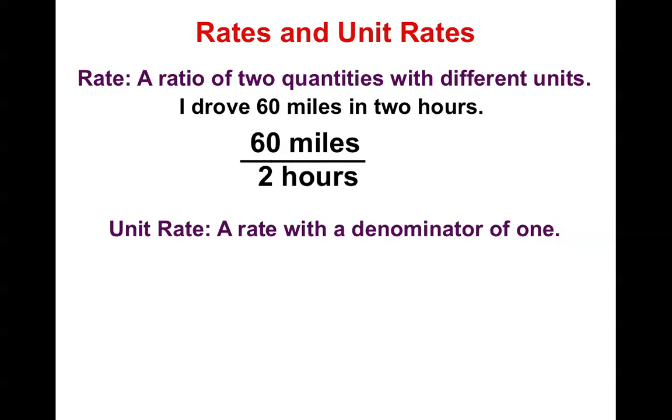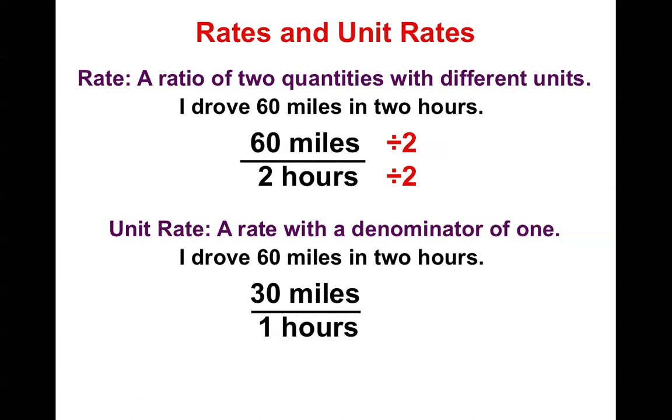Now, a unit rate is a rate where the denominator is always one. So in this situation, if I drove 60 miles in two hours, I have my ratio right up here, my rate. But to get a unit rate, I need to divide the top by two and the bottom by two. Because when I do, I end up getting 30 miles over one hour, and that is known as a unit rate because the denominator is one.